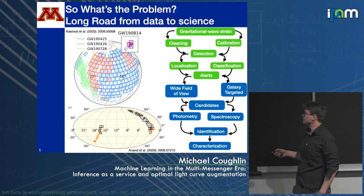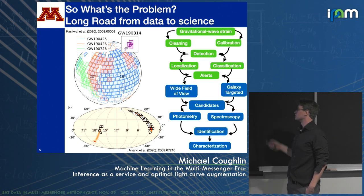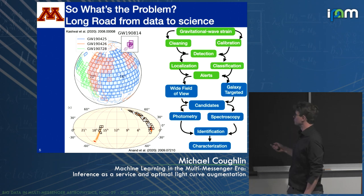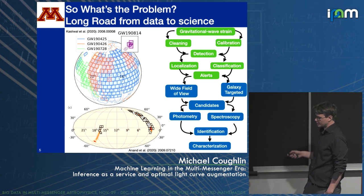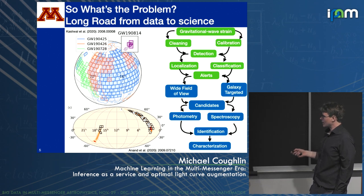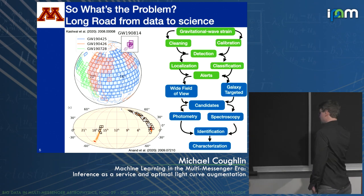This is what we need to be building ourselves for in these coming observing runs. Overall, the problem is there's a really long road from data to science. We have gravitational wave strain from the detectors, we clean and calibrate the data, do gravitational wave detection, localize the signals, classify them as BNS, NSBH, and so on, then issue alerts to the broader community. I'm a sort of optical astronomer by trade.